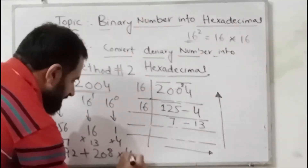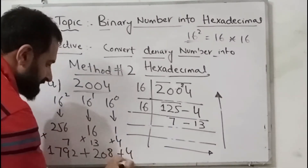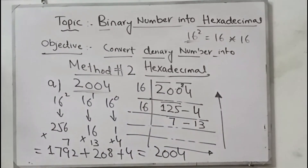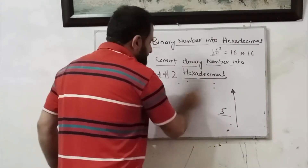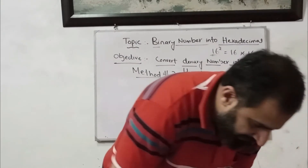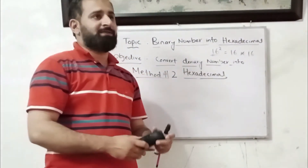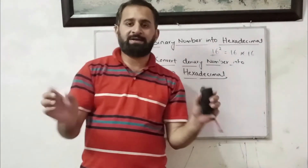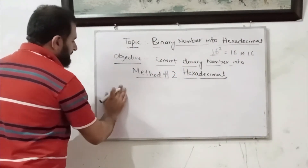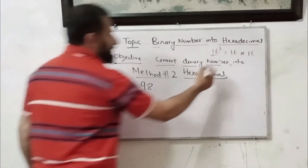And 1 multiplied by 4 gives 4. When you add 1792 plus 208 plus 4, it gives you 2004. Now we will solve another question. I am going to pick a question — in Method Number Two, I will use the decimal number 98 and convert it into hexadecimal.